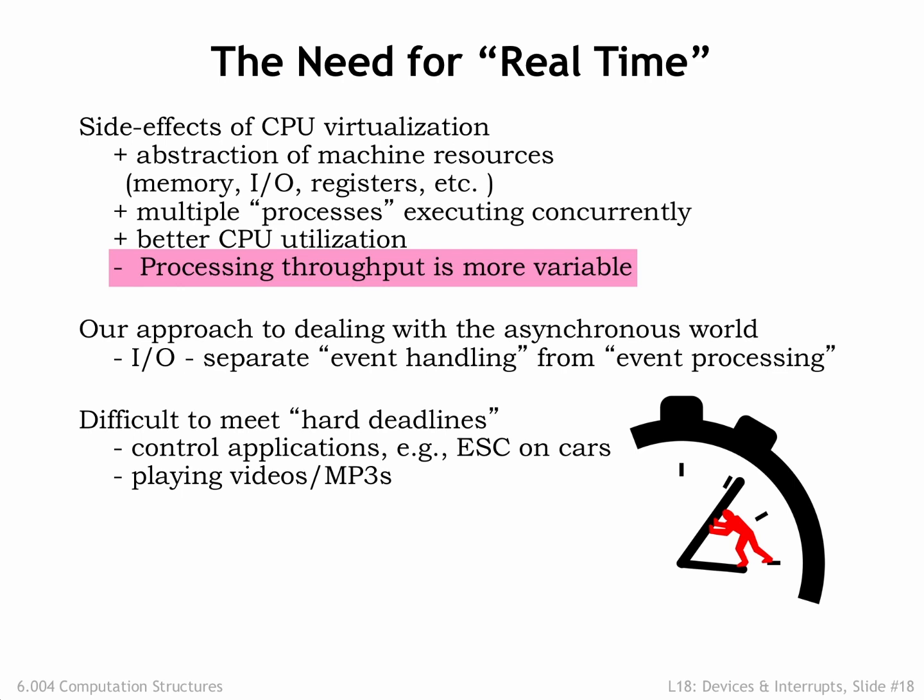Since modern CPU chips provide inexpensive, high-performance, general-purpose computing, they're often used as the brains of control systems where deadlines are a fact of life. For example, consider the electronic stability control system on modern cars. This system helps drivers maintain control of their vehicle during steering and braking maneuvers by keeping the car headed in the driver's intended direction. The computer at the heart of the system measures the forces on the car, the direction of steering, and the rotation of the wheels to determine if there's been a loss of control due to a loss of traction.